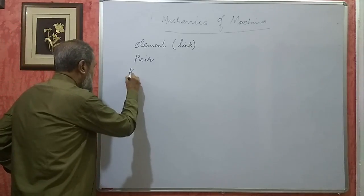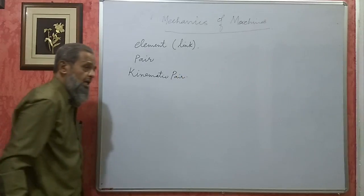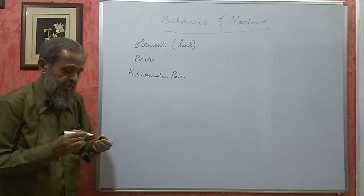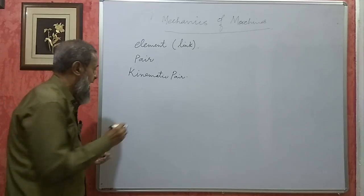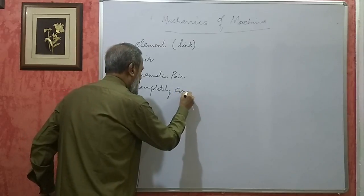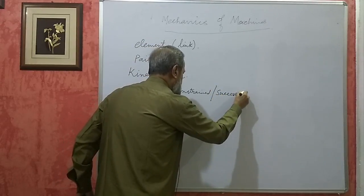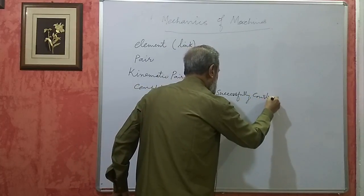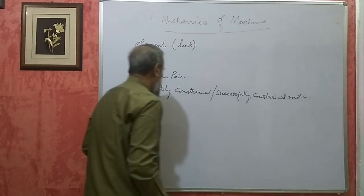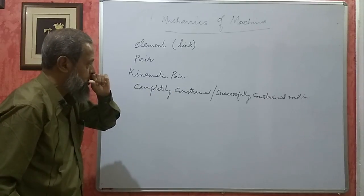Next comes the definition of a kinematic pair. If the relative motion between two elements of a pair is either completely constrained motion or successfully constrained motion, then that pair is called a kinematic pair. To understand this, we first need to understand what completely constrained and successfully constrained motion mean.